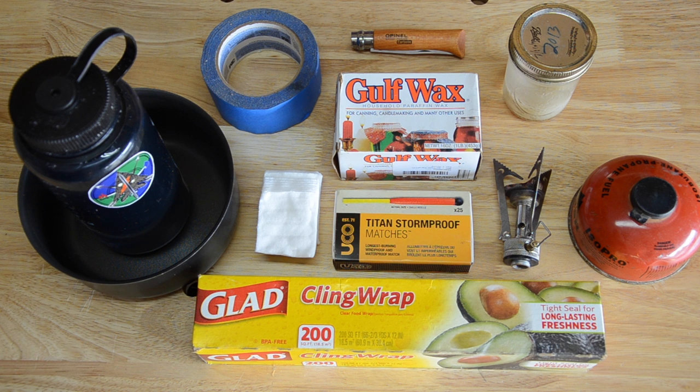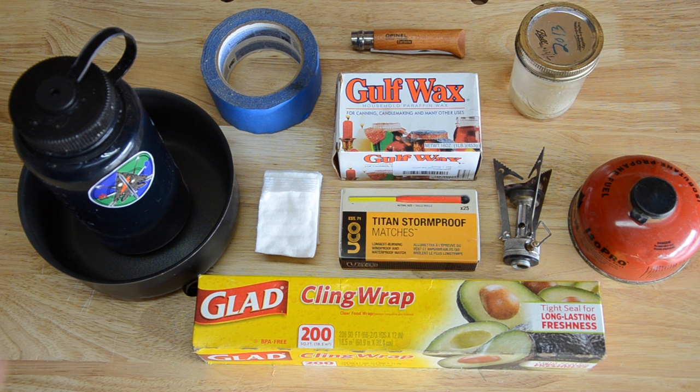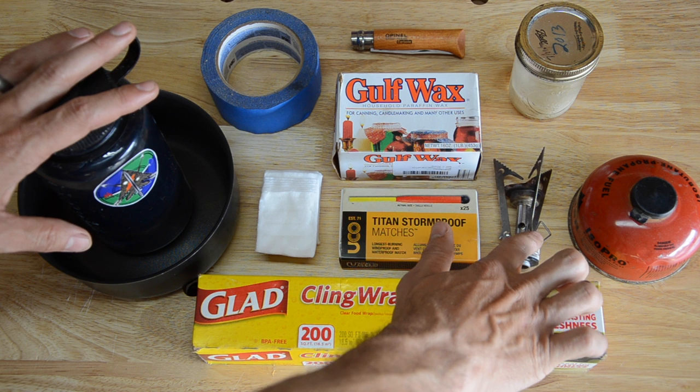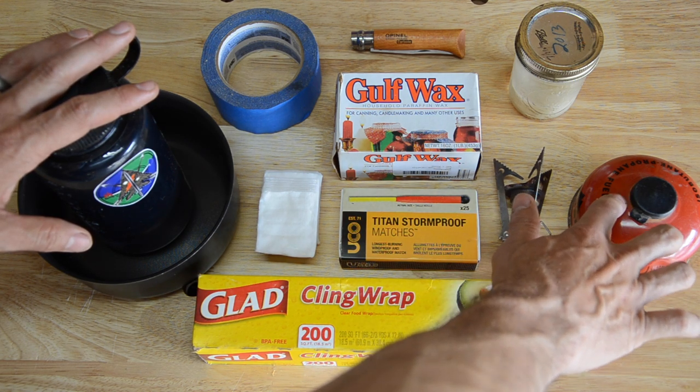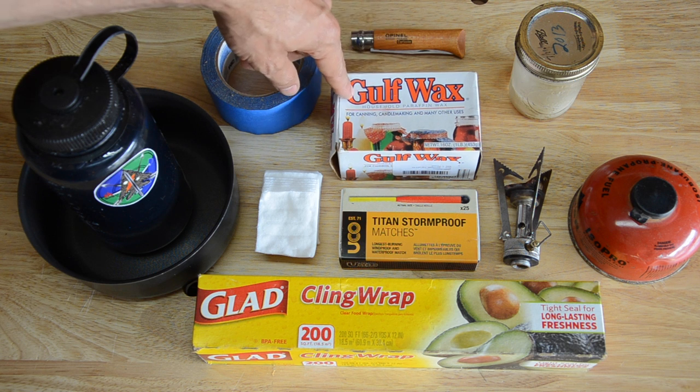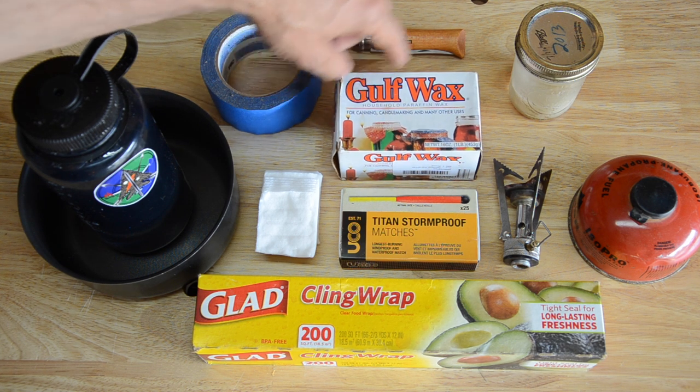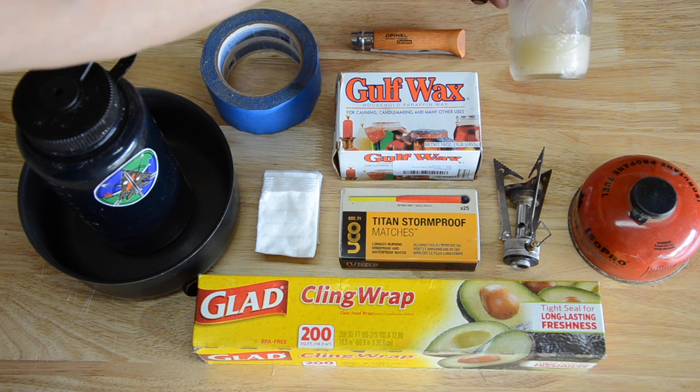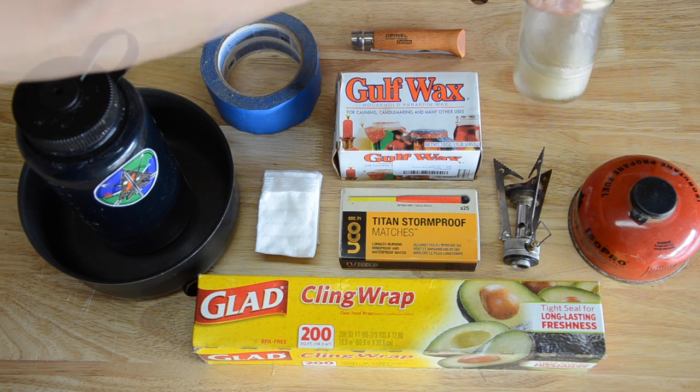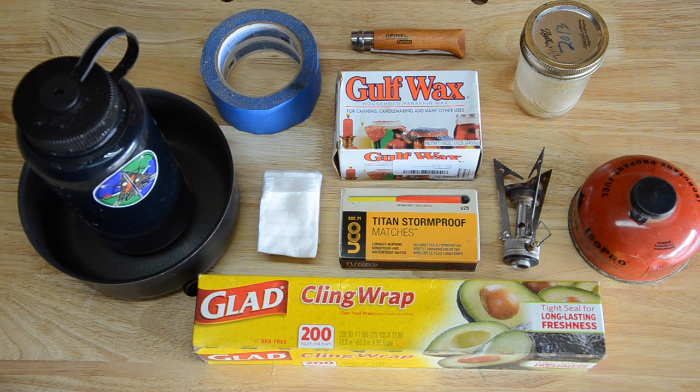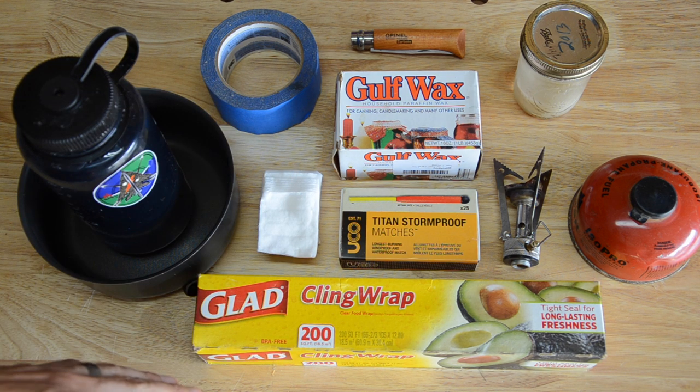So let's talk about some of the materials that I have laid out here. I've got a pot and some water, and of course my MSR pocket rocket and some stove fuel. Some masking tape. I've got a pocket knife so I can cut my wax. This is just regular paraffin wax. I've already made some of these before, so this is just a mason jar with some residual paraffin in it. Of course I've got some cotton squares. You could use any cotton, but I like the squares because they fold around nicely.